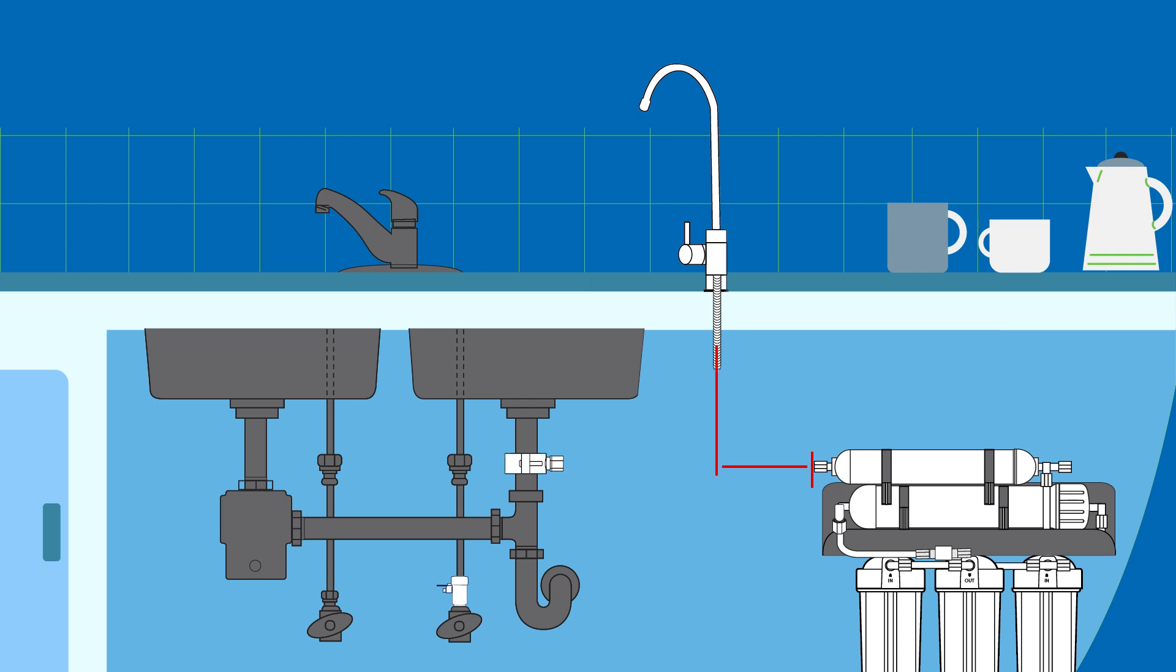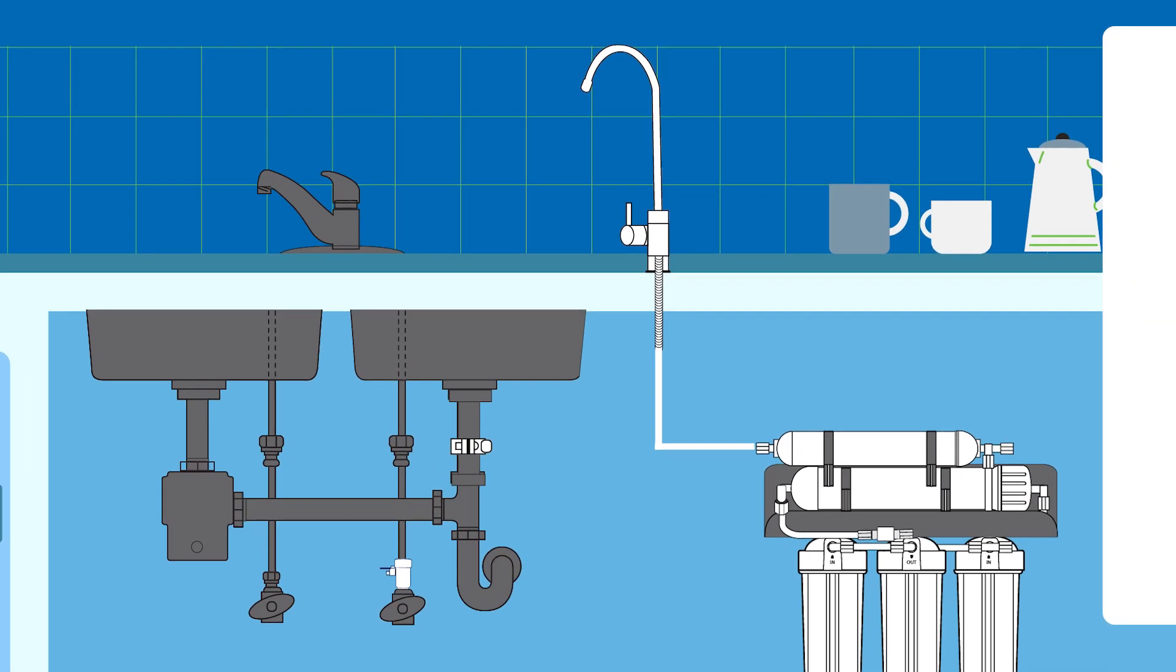Measure the length of quarter-inch white tubing to connect the base of the threaded stem of the faucet to the post-carbon polishing filter outlet. Now connect the quarter-inch white tube from the bottom of the faucet threaded stem to the outlet of the post-carbon polishing filter by unscrewing the plastic nut, then insert the tube and screw it back finger-tight.